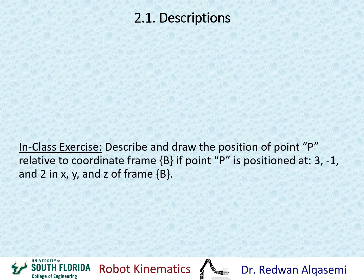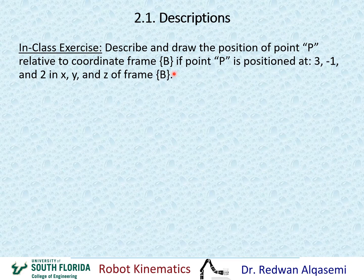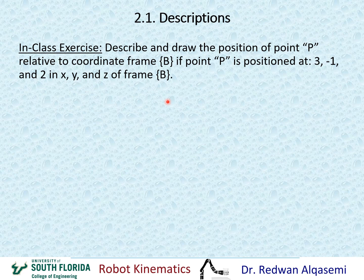Now let's take an in-class exercise. Describe and draw the position of point P relative to coordinate frame B, where point P is positioned at 3, negative 1, and 2 in X, Y, and Z of frame B. Please pause this video and work on this on your own, then resume once you have the solution.